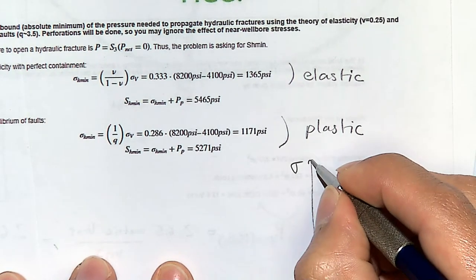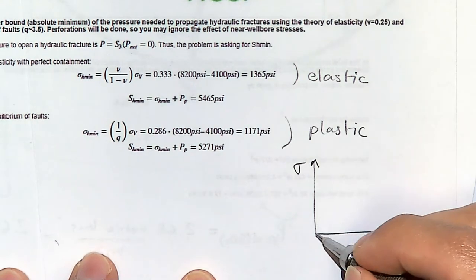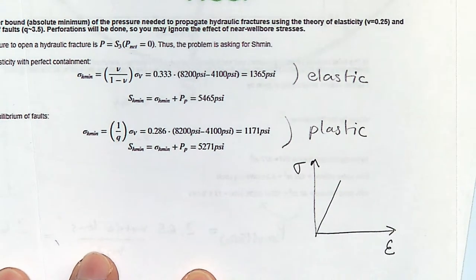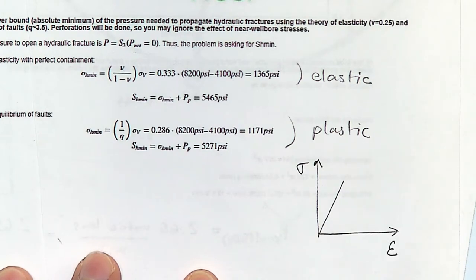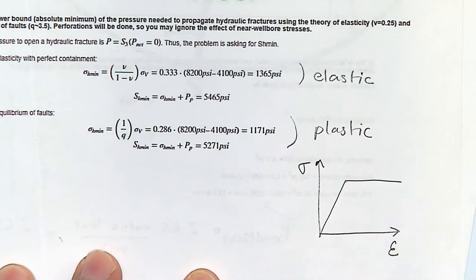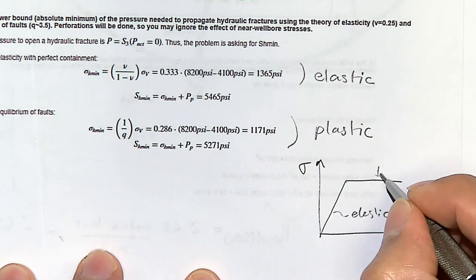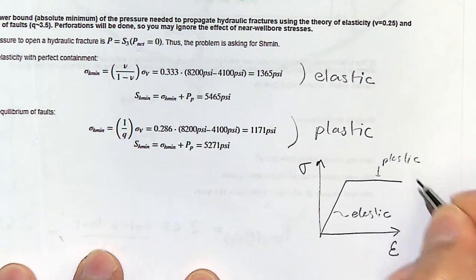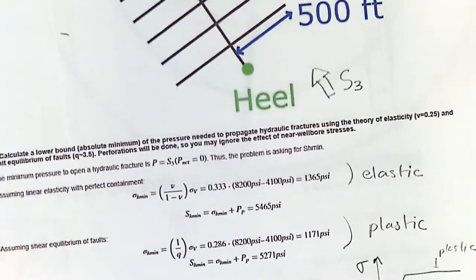On a stress-strain curve: the elastic equation applies on the linear portion where stress is proportional to strain; the plastic equation applies after the rock has yielded. The stresses are not going to increase forever — there's a point at which they won't increase anymore.